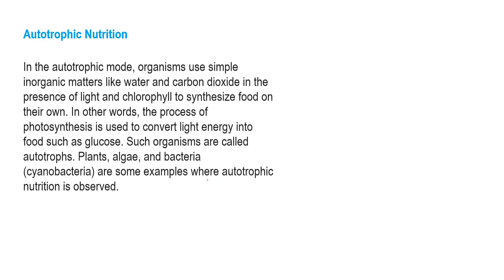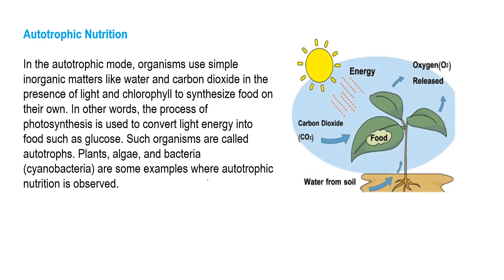In autotrophic mode of nutrition, plants prepare their own food. The organisms counted as autotrophs include some plants, some algae, and also some bacteria which we call cyanobacteria. In autotrophic mode of nutrition, organisms use simple inorganic matters like water and carbon dioxide, in the presence of light and chlorophyll, and they synthesize their food on their own. The process of photosynthesis converts light energy into food such as glucose, and the organisms which follow such nutrition we call autotrophs.